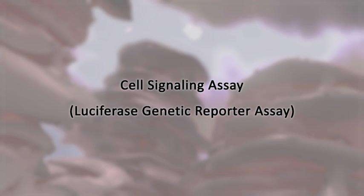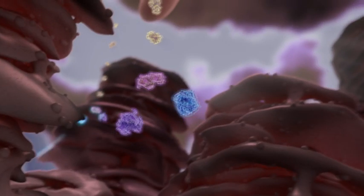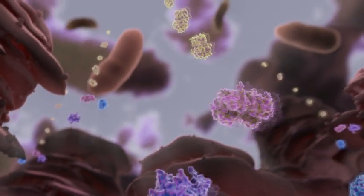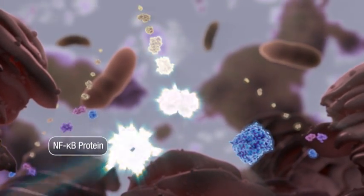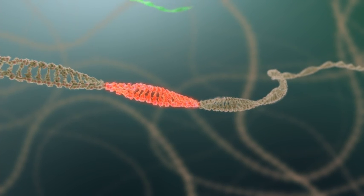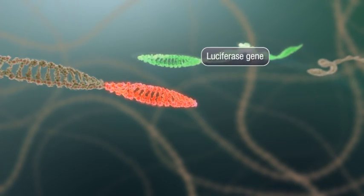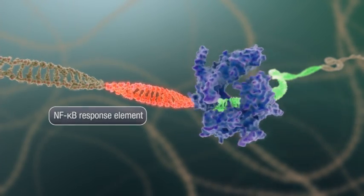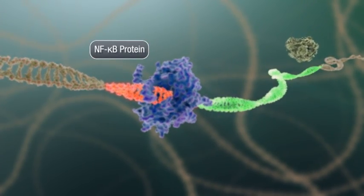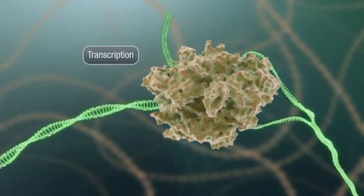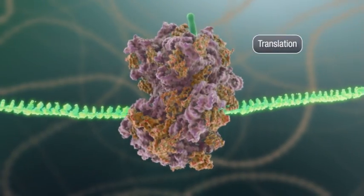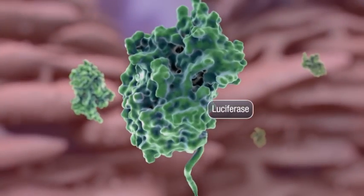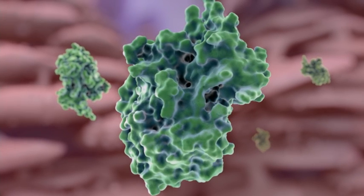Another question drug discovery scientists need to understand is which cell signaling pathways are modulated by the lead compound. They create recombinant cancer cells where a luciferase gene has been fused to a key cell viability response element, such as NF-kappa-B. The fused luciferase gene is then transcribed and translated to form luciferase, which is now available for reaction in the cytoplasm of these recombinant cells.